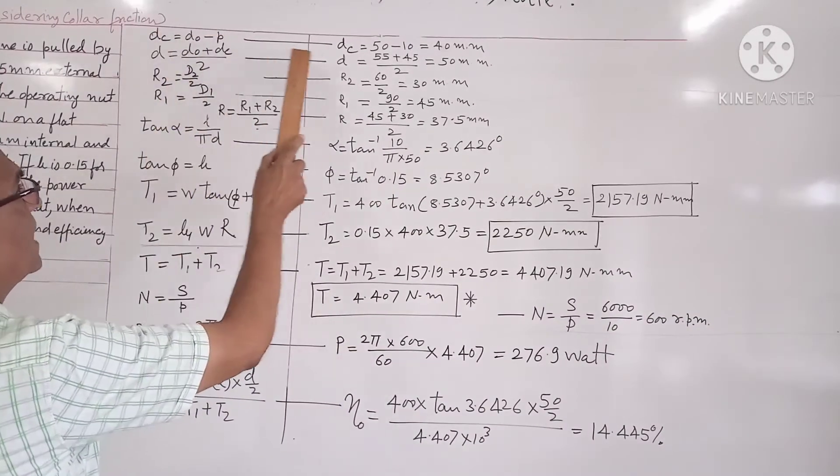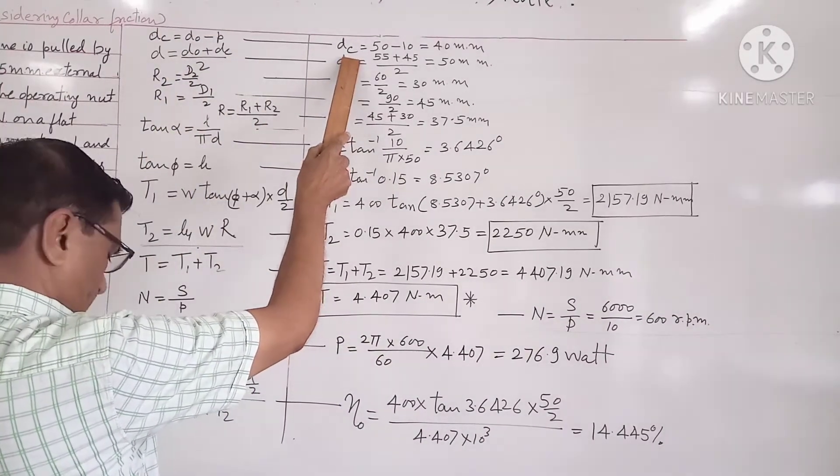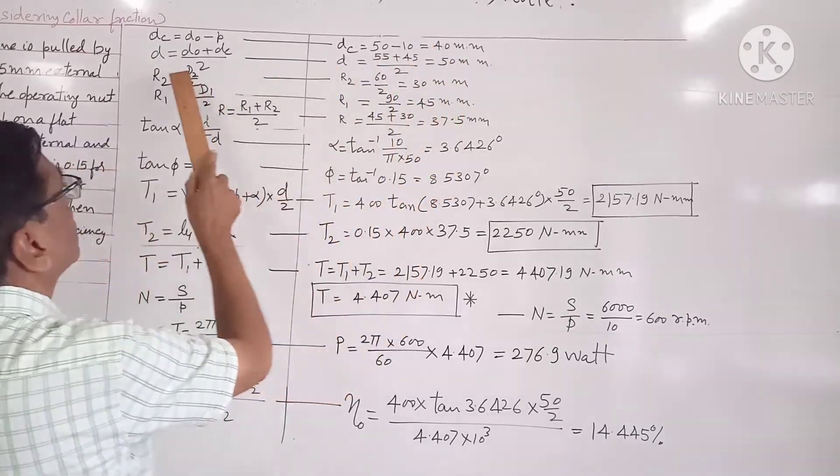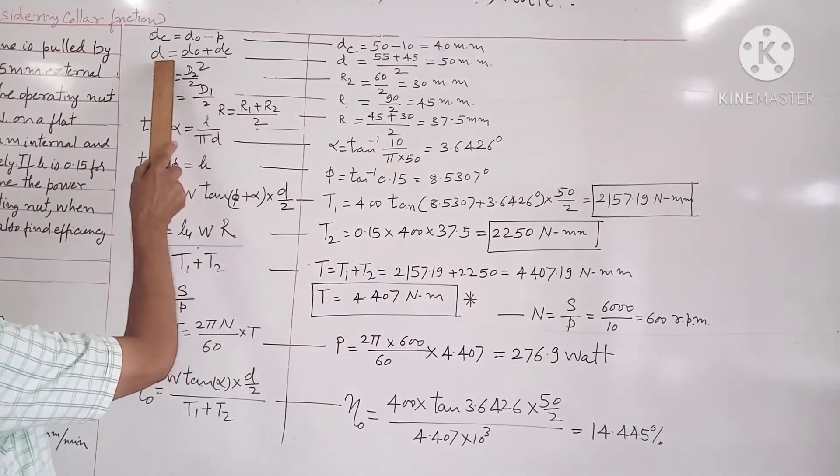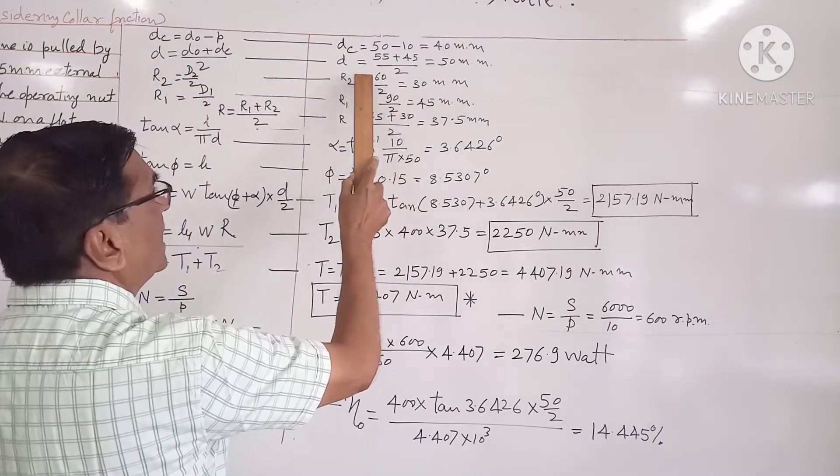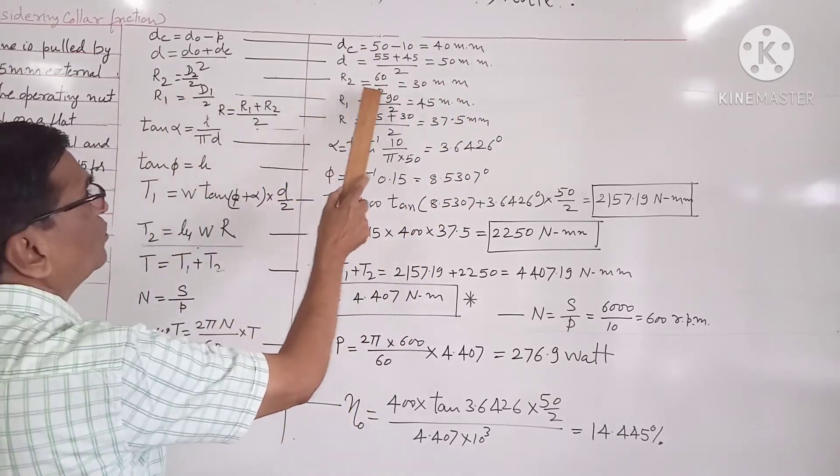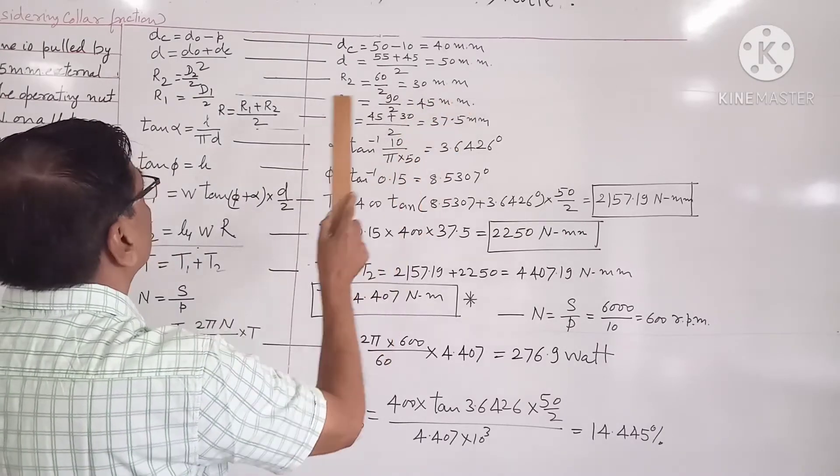the mean effective diameter that comes out to be 50 mm. R2 comes out to be 30 mm and R1 comes out to be 45 mm.